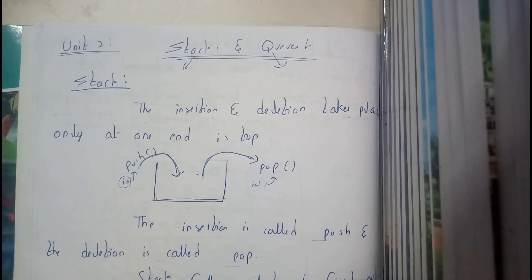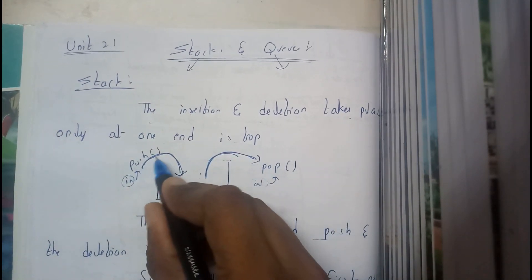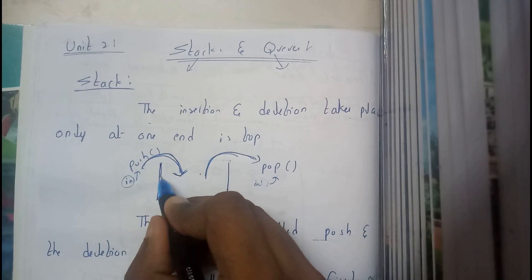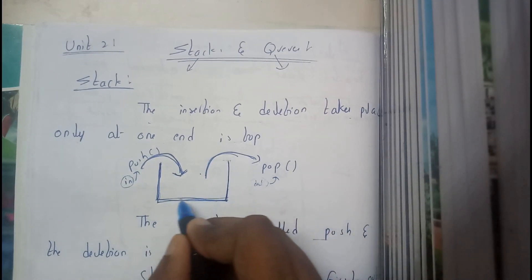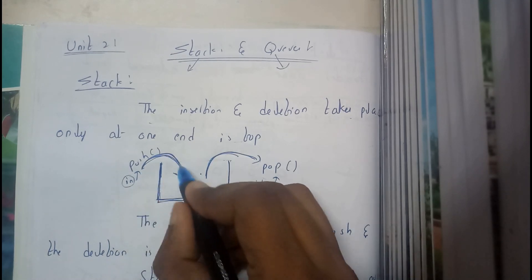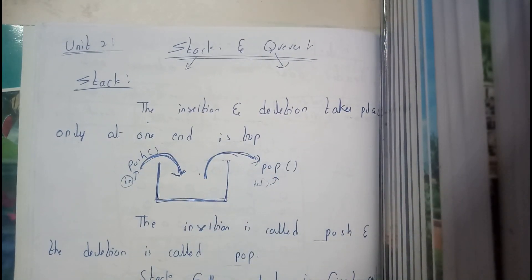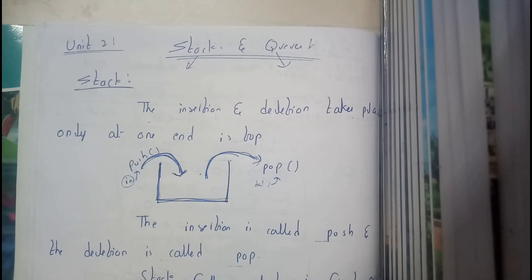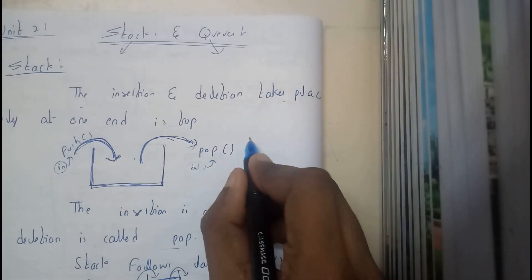The insertion and deletion takes place at one end only — that is one of the most important things about stacks. Both deletion and insertion take place at a single end. So let us assume this is a stack: insertion of new things and deletion of past things takes place at the same end.